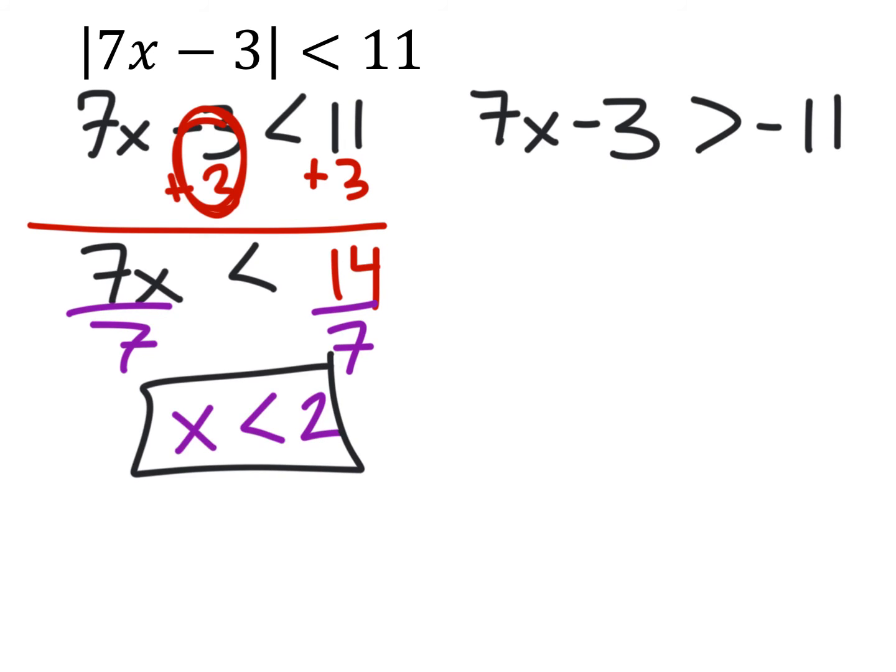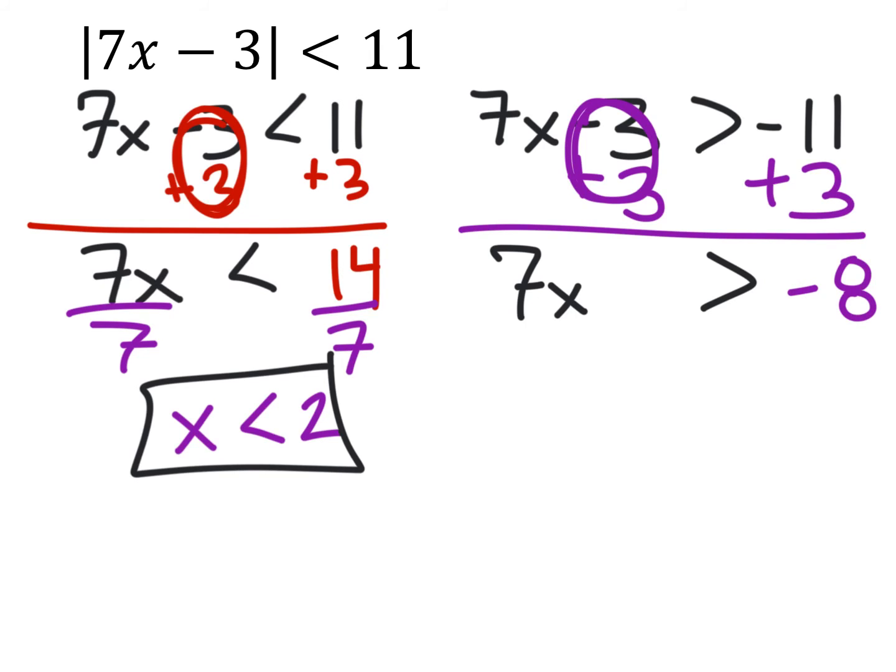And we shouldn't forget that this needs to be in interval notation. But let's go ahead and solve the inequality on the right there first. So we're going to do the same thing. We're going to add 3 to both sides. And that gives us the 7x. And this will be greater than, because the negative 3 plus 3 cancels out with the 0. Negative 11 plus 3 is negative 8. Finally we'll just divide by 7 on both sides. And we find that x is greater than negative 8 sevenths. And this is our second solution.